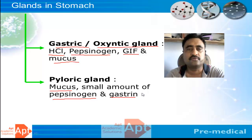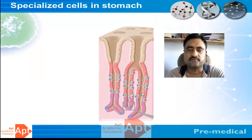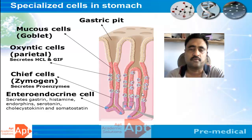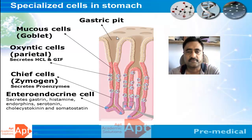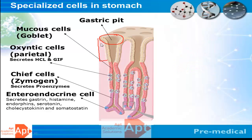To understand how these cells secrete hormones and enzymes, let's look at the structure of a gastric pit. The gastric pit continues into a region known for mucus secretion; the cells that secrete mucus are called goblet cells. Below the mucus-secreting region are the oxyntic or parietal cells, which are the main source of hydrochloric acid and gastric intrinsic factor. Just below those are the chief cells or zymogen cells, primarily responsible for forming pepsinogen.